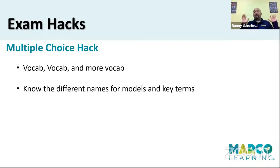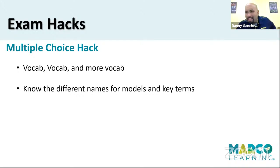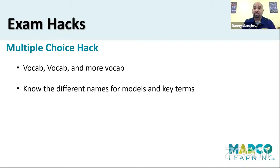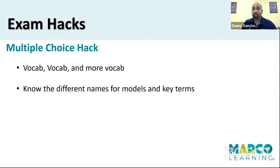The second hack: sometimes the same thing has three different names, and it is mind-blowing. I'll have kids say, 'Mr. Sanchez, you never taught us this concept.' They tell me the name, and I'm like, 'Oh, that's just another name for this.' They're upset because they knew the other name but not this one. Well, some things have two, three, four different names. We're going to get into a few of those when we talk about the different types of regions. The multiple choice hacks are to study the heck out of vocab — not only do you need to know definitions, but you might have to apply that definition. And know that certain things have two, sometimes three different names.